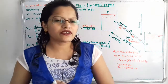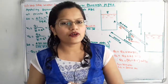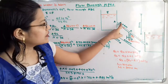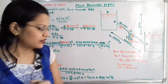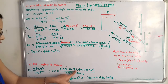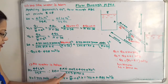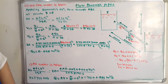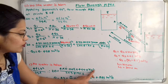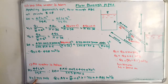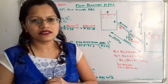Using the formula: head loss = 4FLV² / (2GD). With L = 4000, D = 0.6 m, F = 0.005: 20 = (4 × 0.005 × 4000 × V²) / (2 × 9.81 × 0.6). Solving for V, the only unknown, we get V = 1.715 m/s.